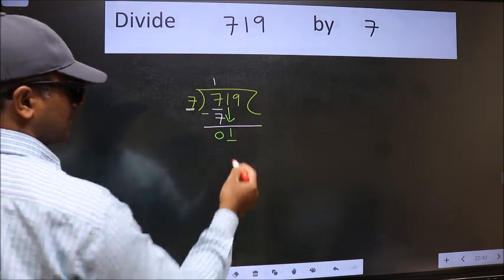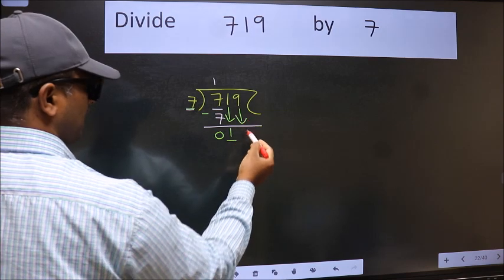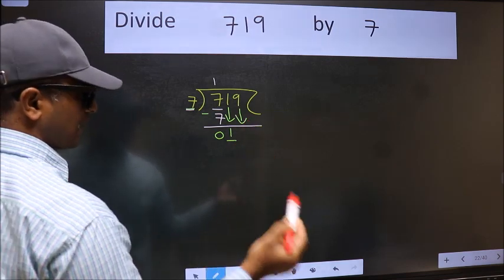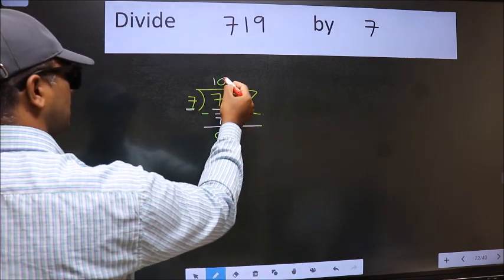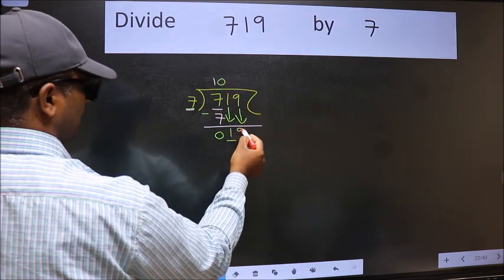So we should bring down the second number. And the rule to bring down the second number is we should put 0 here. Then only we can bring this number down.